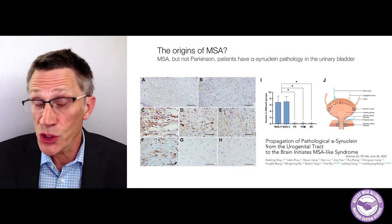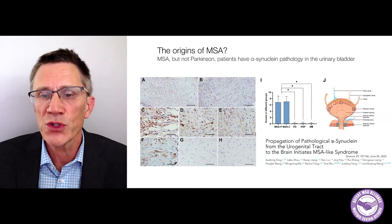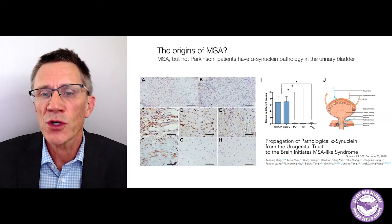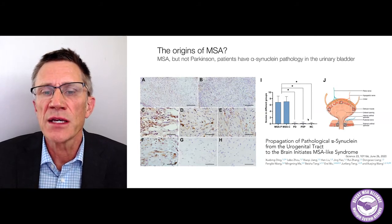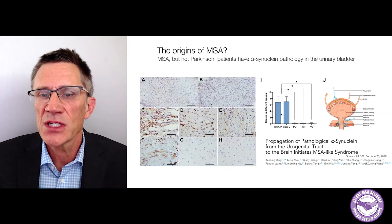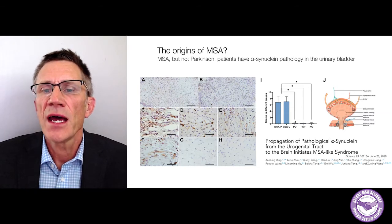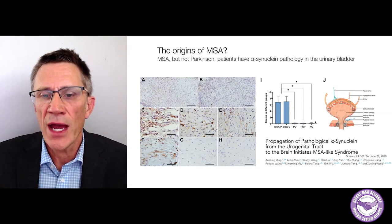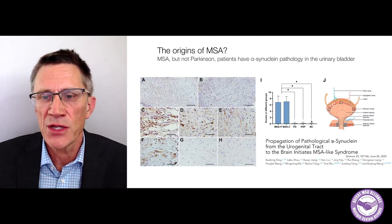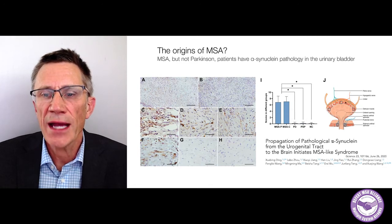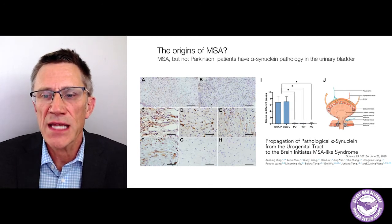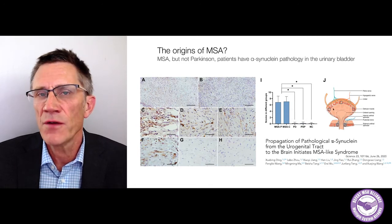They also compared with progressive supranuclear palsy and normal controls. MSA was a very common occurrence for these aggregates, while it was extremely rare or didn't happen in the other groups. These were aggregates in nerve endings out in the periphery.